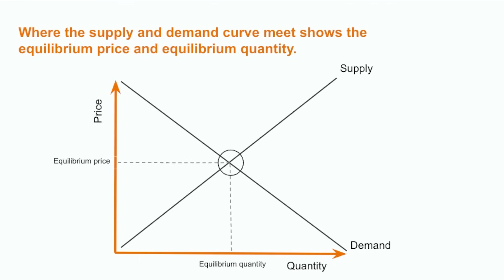Where the supply curve and demand curve meet, here are the equilibrium price and the equilibrium quantity. This is the quantity that will be produced and sold, and the price at which it will be sold. This graph produces a global vision of the market for a certain good.